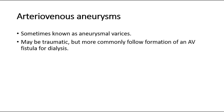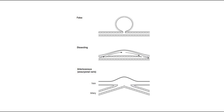Arteriovenous aneurysms, sometimes known as aneurysmal varices, may be traumatic but more commonly follow formation of an AV fistula for dialysis. This picture shows a false aneurysm, a dissecting aneurysm, and an arteriovenous aneurysm.